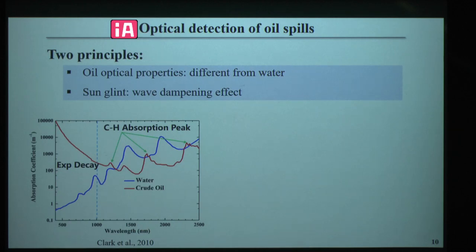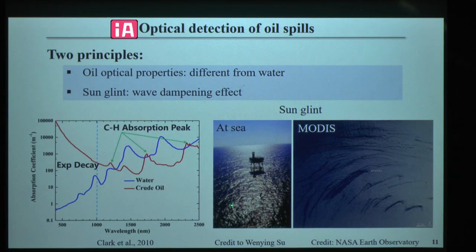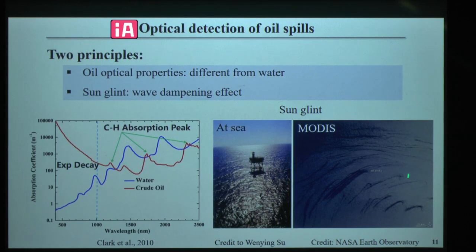The second principle is sun glint. Sun glint is the specular reflection of sunlight — because the sea surface is not perfectly flat, the rough surface reflects sunlight into many angles. The presence of oil slick on the ocean surface dampens the surface waves, thus modulating the reflected sunlight measurable by the optical sensor. By this means, oil slick can be detected under sun glint.